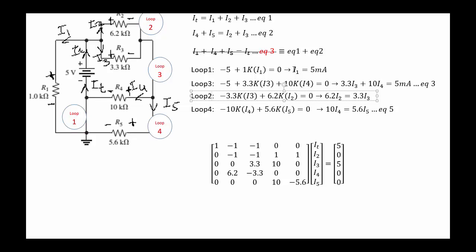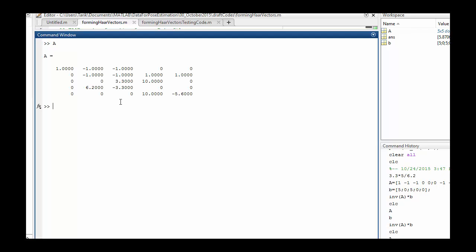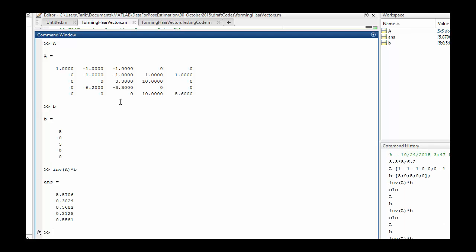Since we already found I1, we are left with five unknowns: I total, I2, I3, I4, I5. Building the system of linear equations, I used MATLAB — the coefficient matrix A and solution vector B. Multiplying the inverse of A by B gives us the currents: I total, I2, I3, I4, and I5.